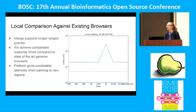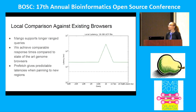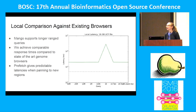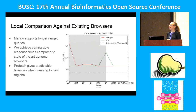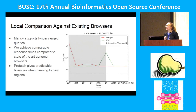We've done some local comparisons. The green line here is a query for a set of queries on a standard genome browser. We see a little spike in our query because that spike is the first point at which the tool loads data. So we get a little latency when initially loading data on a smaller region. Mango initially has a higher startup time, which we're working to reduce, but overall on a local machine we're pretty compliant with current tools, which is really great.